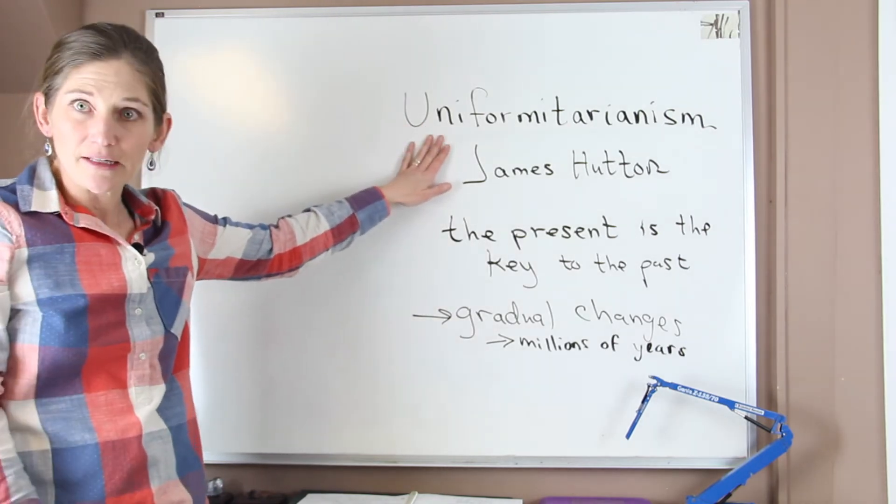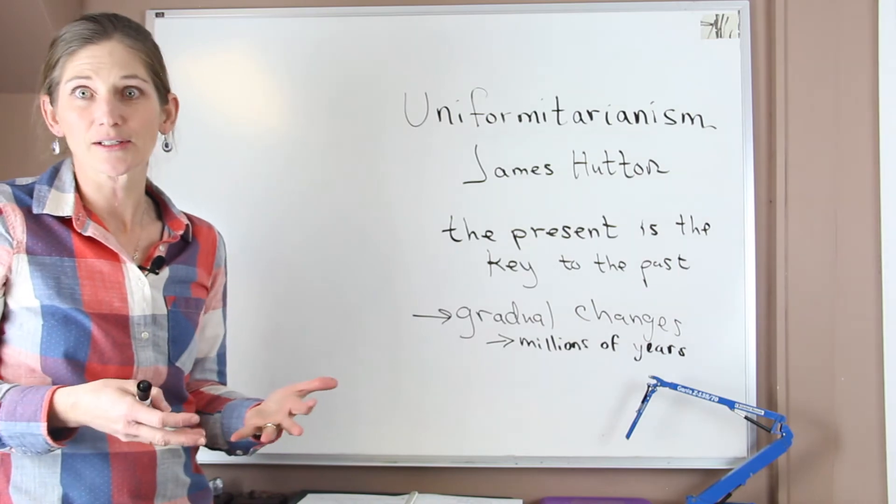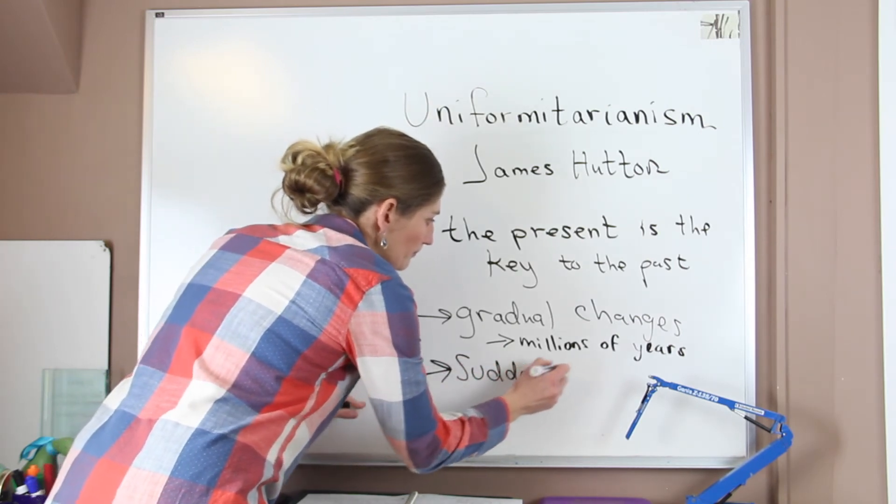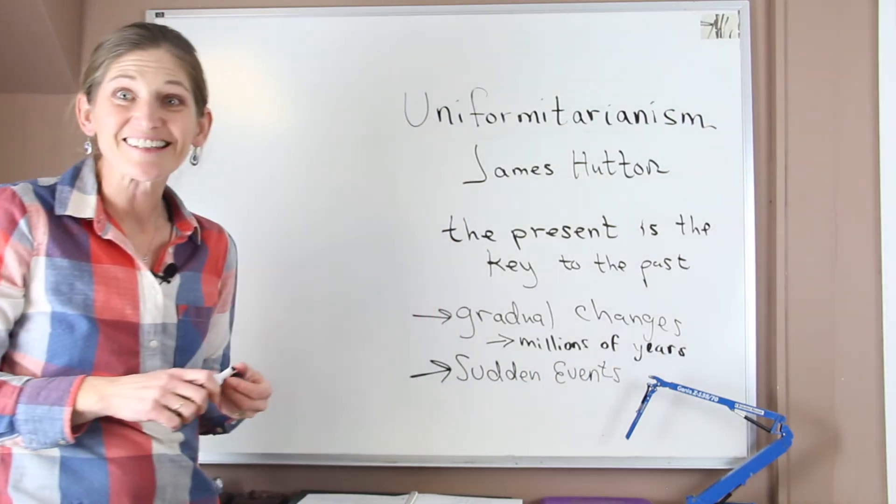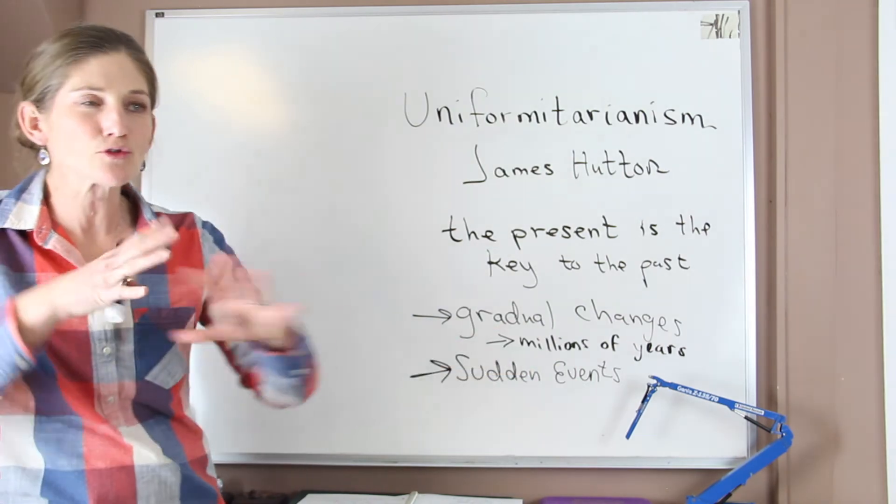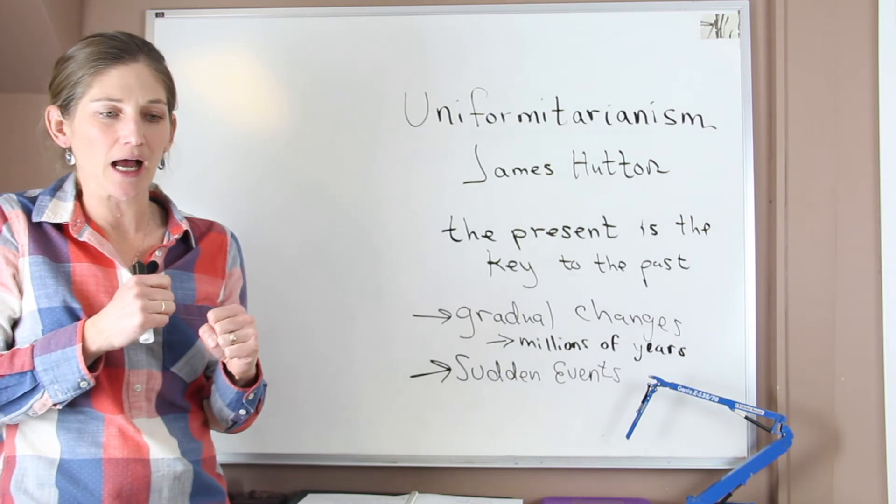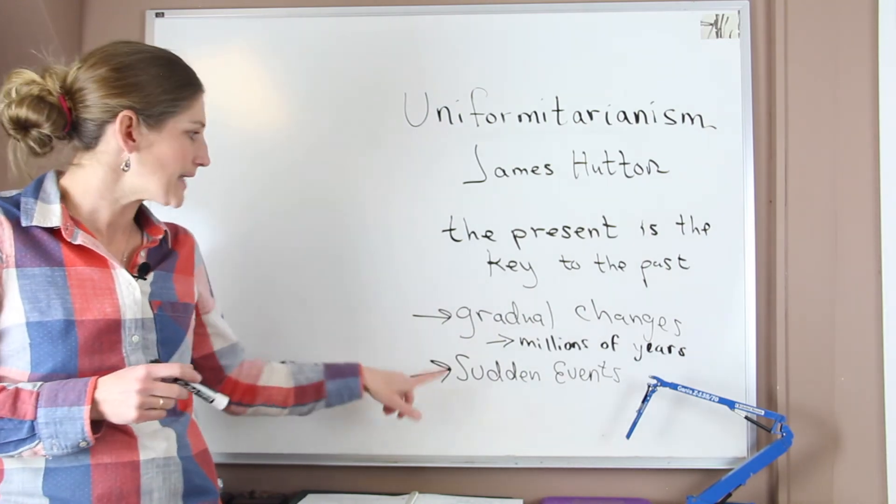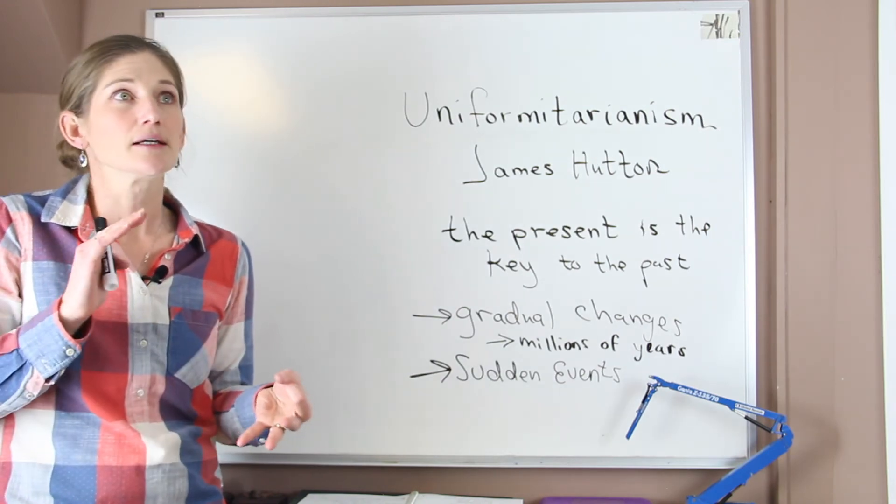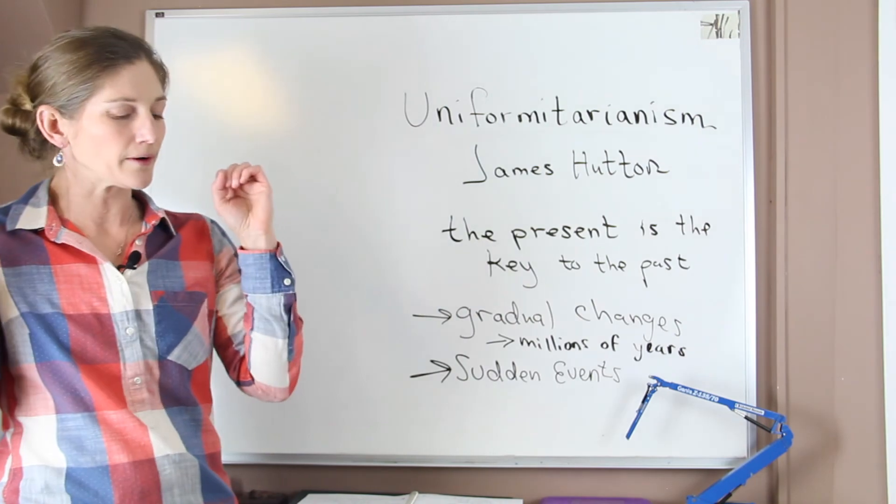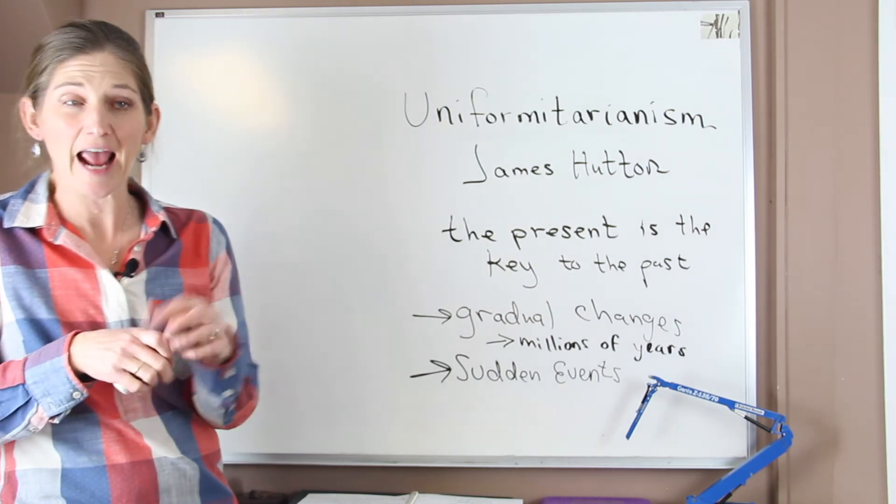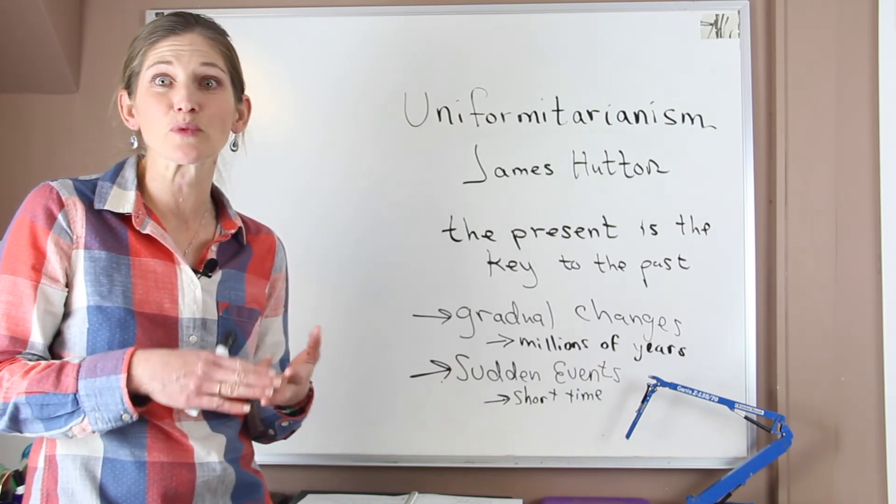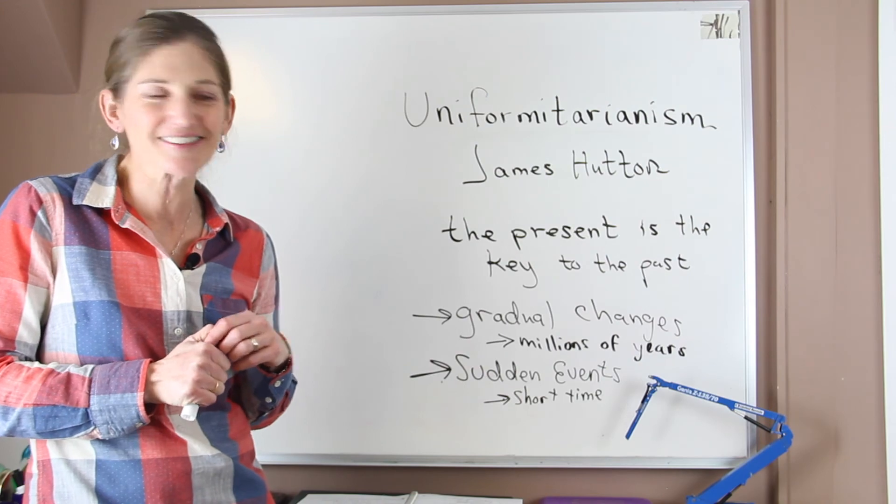Now I just want to point out that uniformitarianism doesn't ignore the fact that we do occasionally have catastrophic events, or sudden events. Even though all of these gradual processes are happening and shaping our landscapes, we do have really sudden events that happen naturally and they do create changes that are unique. These sudden events include volcanic eruptions, earthquakes, tsunamis, hurricanes. These occur over very short time frames, things on the order of days, weeks, months, even years.